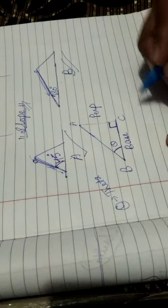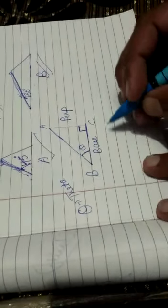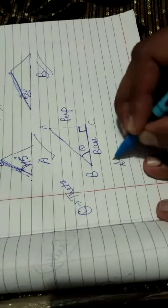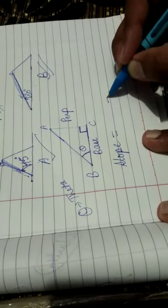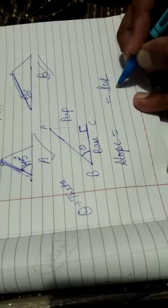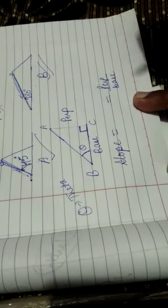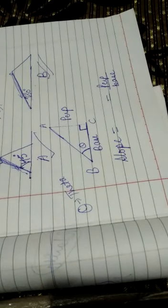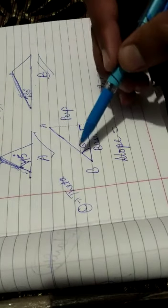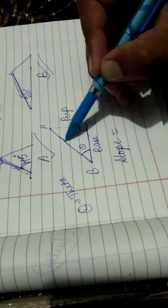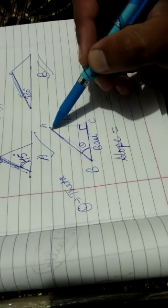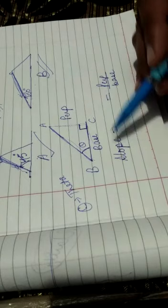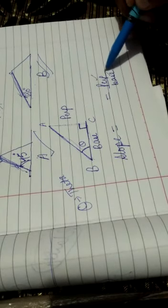Now to find the slope of anything, slope is always equals to perpendicular upon base. I repeat, if I want to find out the slope of this line, then firstly make a 90 degree triangle, and the slope is given by perpendicular upon base.